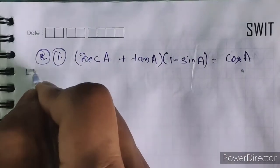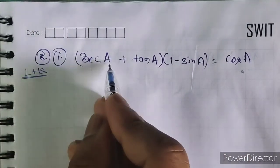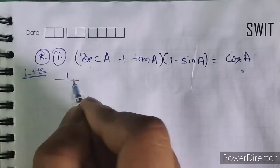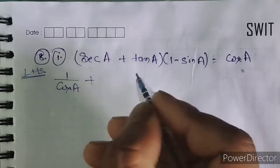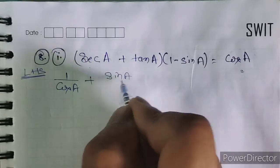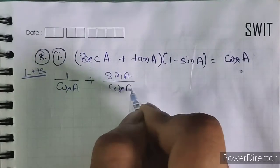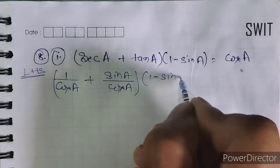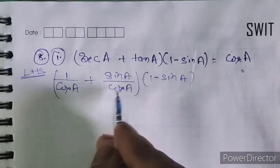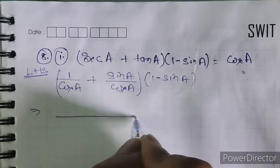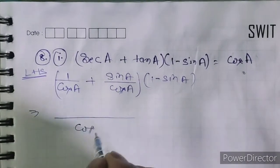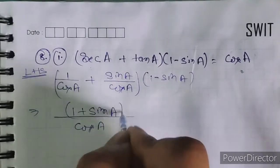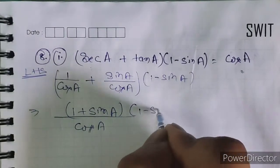So we write LHS: sec A plus tan A. Sec A is 1/cos A, tan A is sin A/cos A. Taking LCM as cos A, the numerator becomes 1 plus sin A over cos A. This is divided by (1 minus sin A).